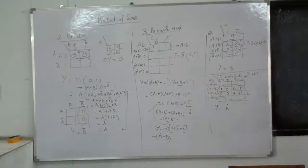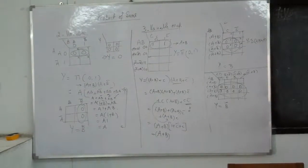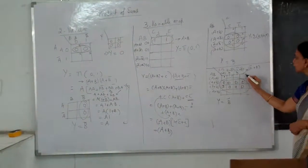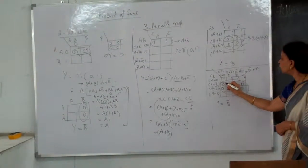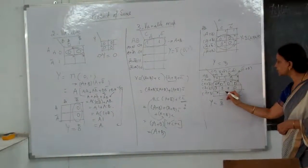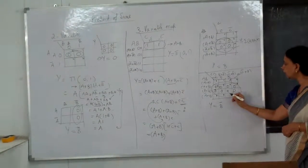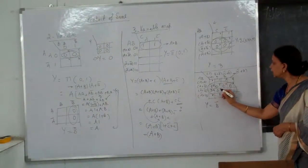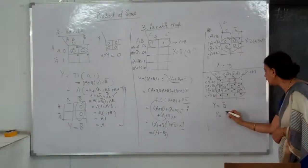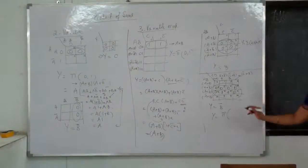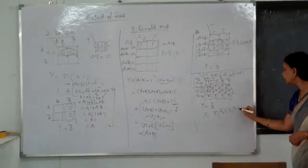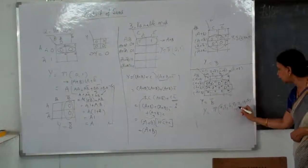In Product of Sums you take them as 0s; in Sum of Products you take them as 1s. So you can call it using Π notation. Whatever problems we have done using Sum of Products, you can do the same using Product of Sums — the only thing is how you write the expression. Your Y will now be written using Π (product/Pi notation), and Σ refers to sum.